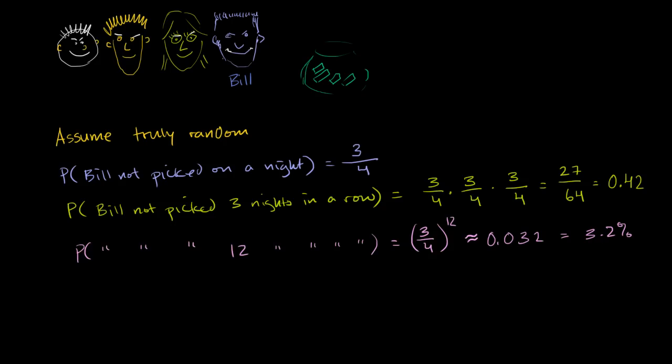This is what statisticians actually do — they often define a threshold. If the probability of this happening purely by chance is more than 5%, then maybe it was happening by chance. But 3.2% falls below that 5% threshold, which statisticians often use, though it's somewhat arbitrarily defined. This is a fairly low probability, so you might be tempted to reject the hypothesis that it was truly random — to conclude that Bill is cheating in some way. And if it wasn't 12 in a row but 20 in a row, the probability becomes really, really small, and your hypothesis that it's truly random starts to really come into doubt.